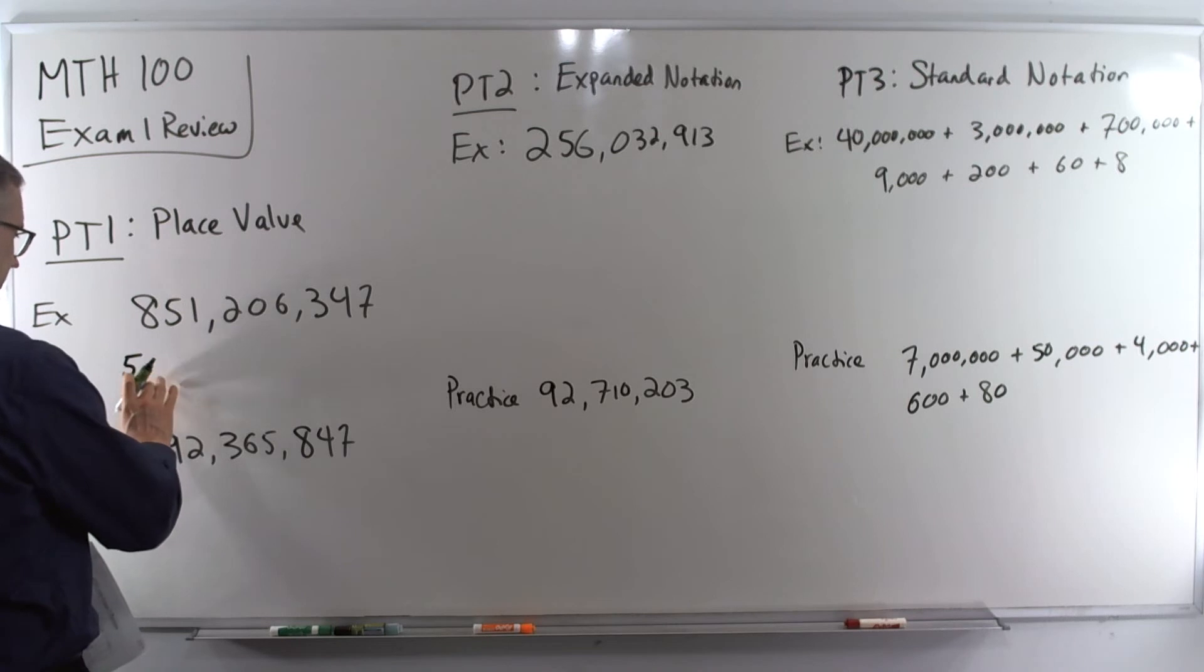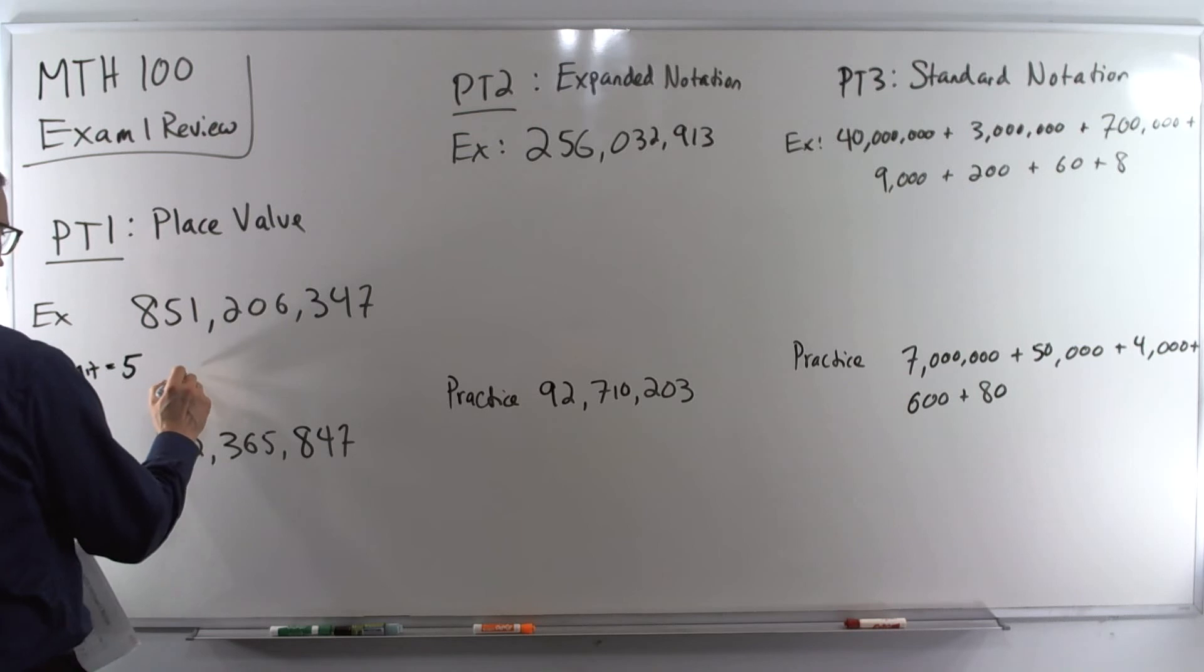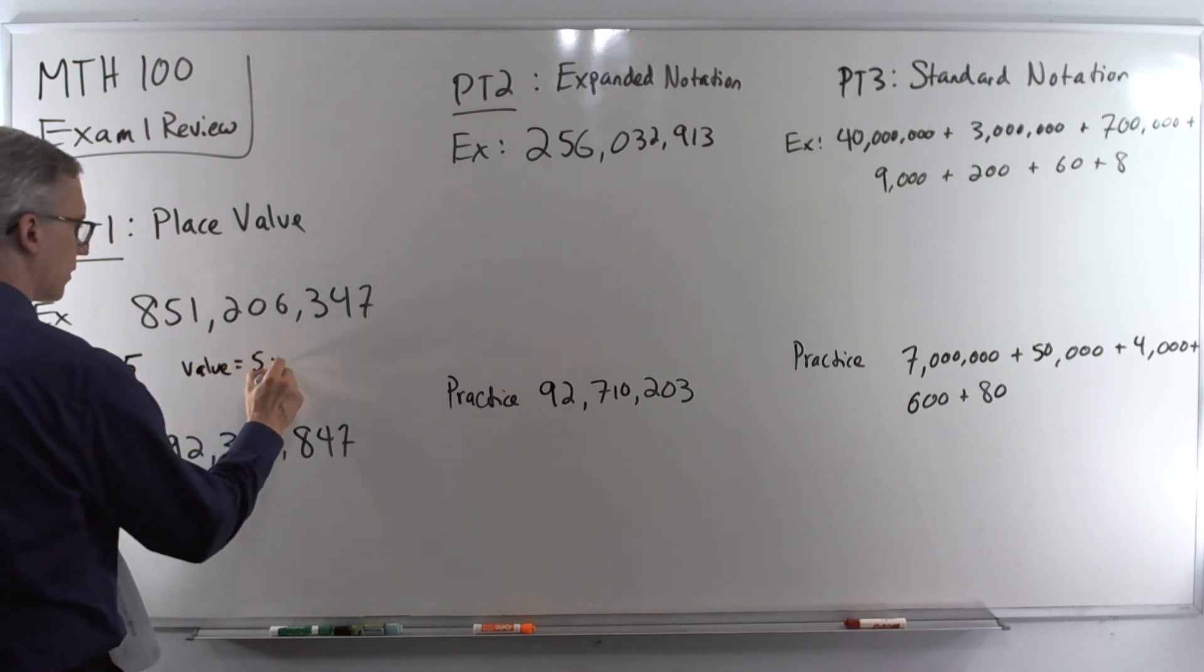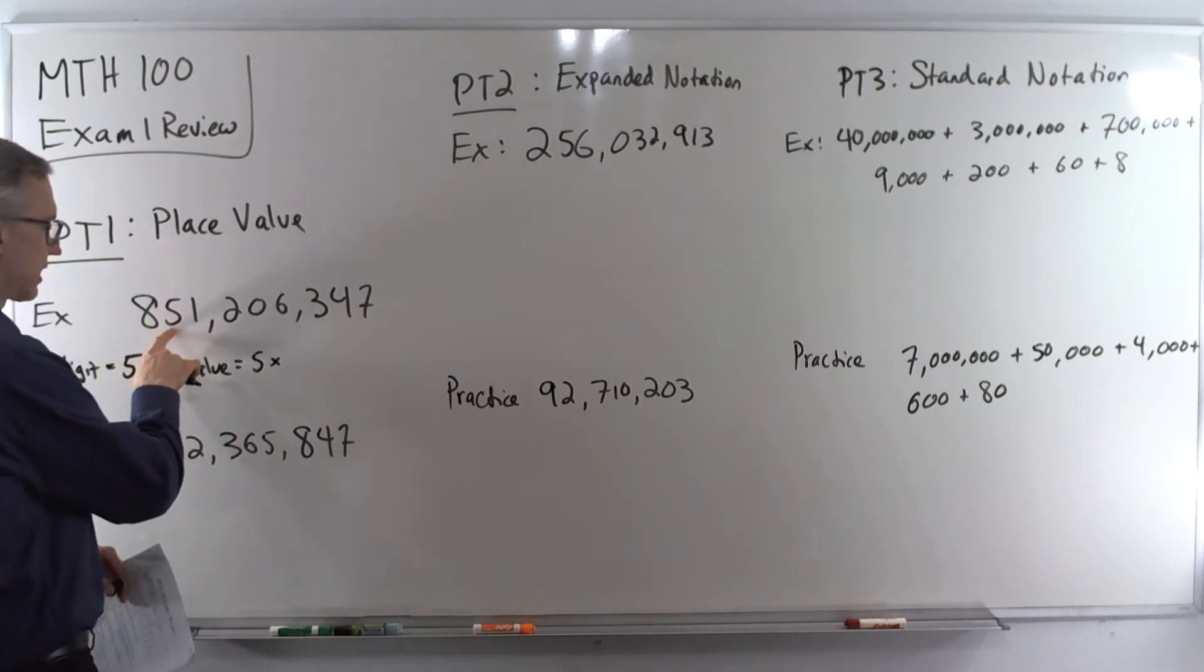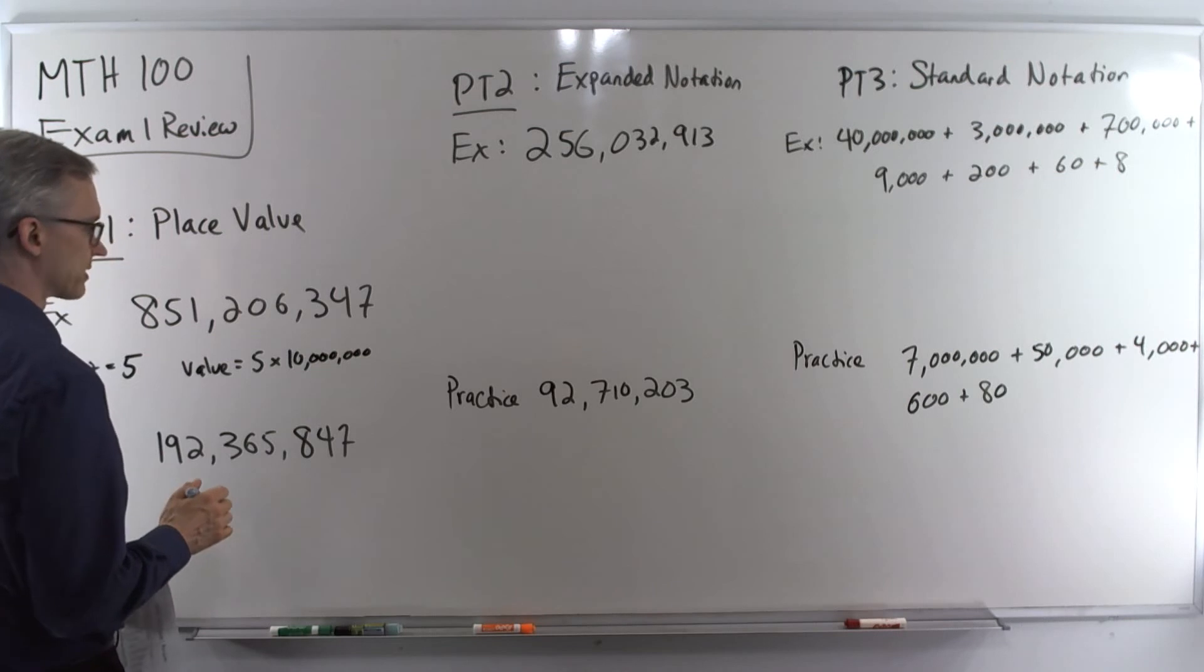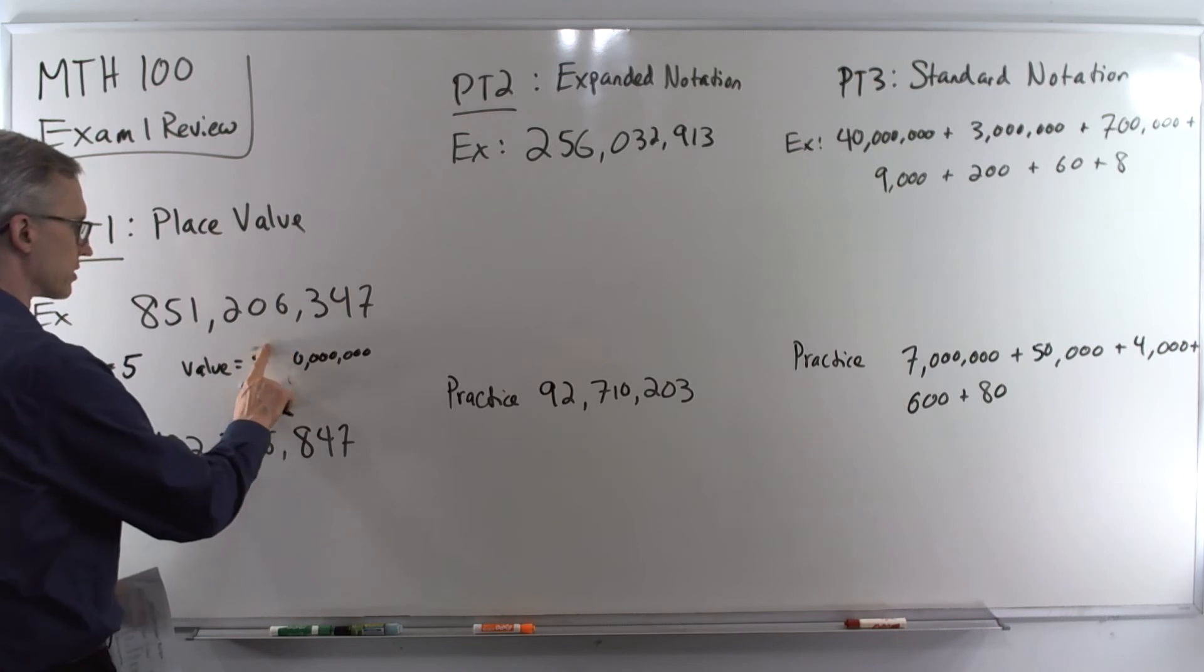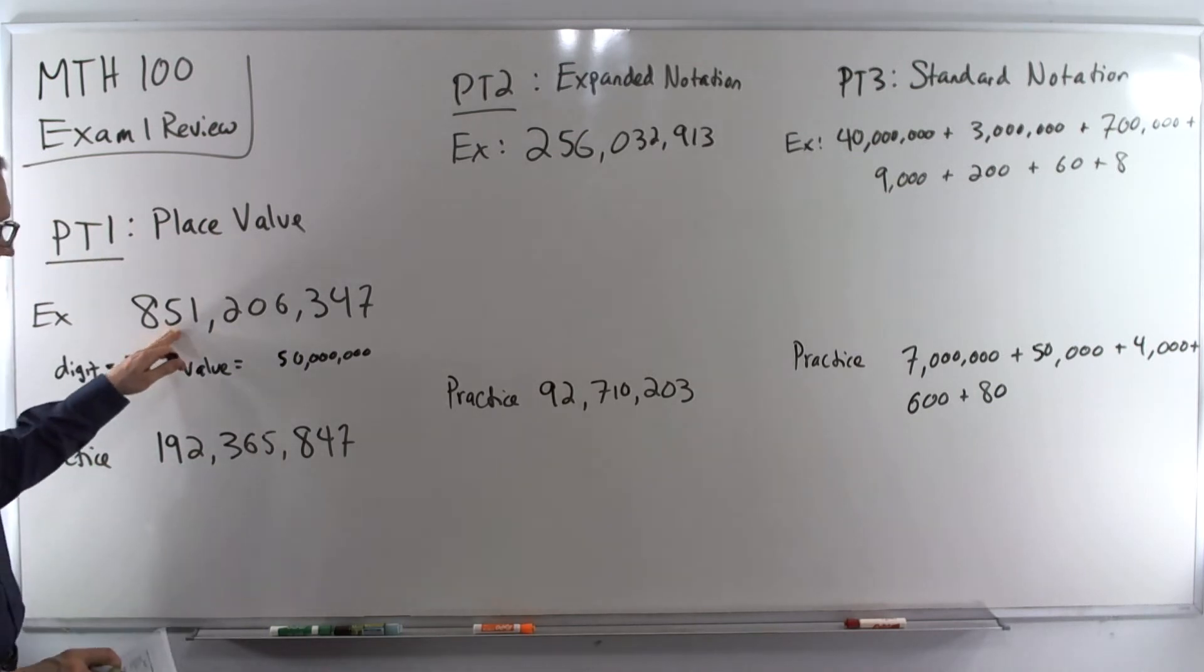And now the value is five times the place value. The digit in that place times the place value. Place value is ten million. And when you multiply this out, the only thing you have to multiply by is the one. So that turns this into fifty million. So the value of that digit is fifty million.